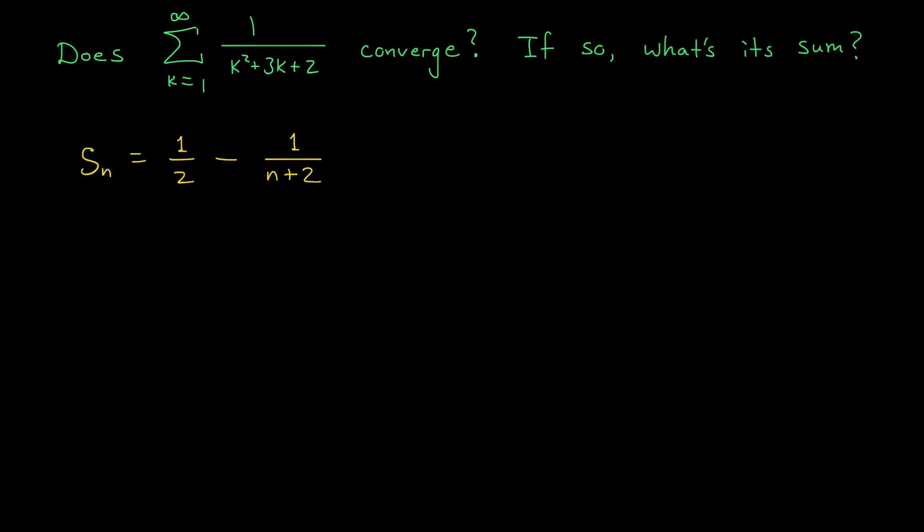Once we've figured out the partial sums, deciding whether or not our series converges is usually pretty easy. We just need to apply the definition from our overview video. That is, we have to ask ourselves, do these partial sums approach some finite value as n tends to infinity? Well, in this case, it's pretty easy to see that they do. When n tends to infinity, these partial sums are going to approach a value of 1 half. So in this case, we can conclude that yes, the series does converge. Its sum is given by the limit of the partial sums, which in this case is 1 half.